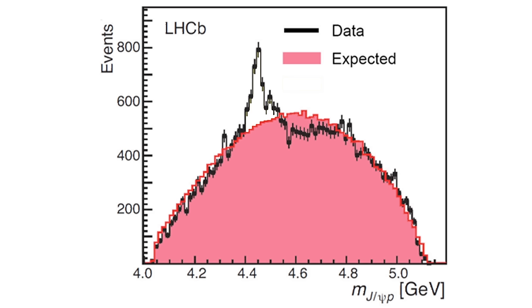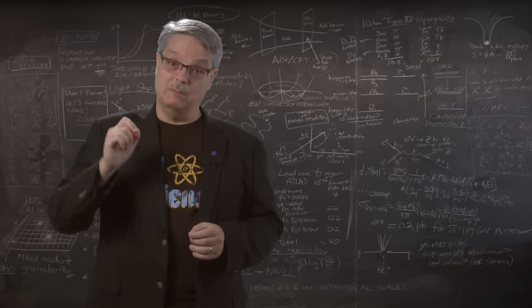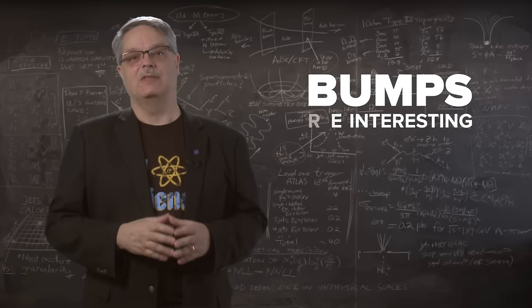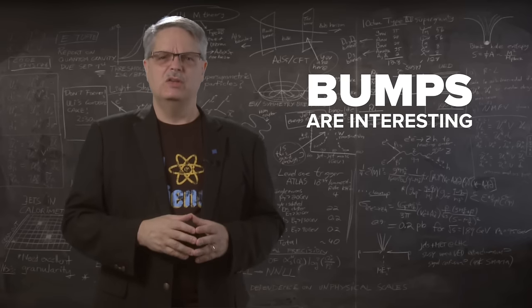They found, when they looked at the proton and the J/psi meson, that the data showed unexpected features—there were bumps in the data. So, in particle physics, bumps are interesting. They can mean a discovery. So they looked harder at them.